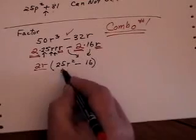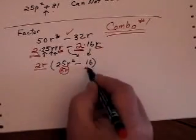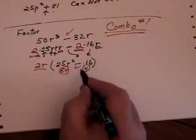Well, there is a perfect square, whose square root is 5 times R. And there is a perfect square, whose square root is 16. And there is a minus sign.